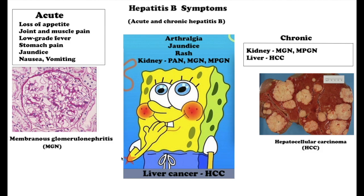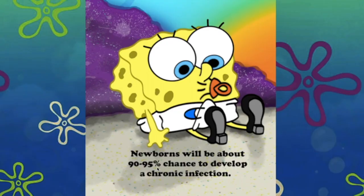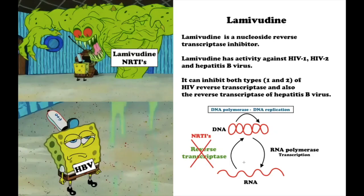If infection occurs in the first year of life, the probability of chronicity is 90–95%, which is why all infants should receive the hepatitis B vaccine as soon as possible after birth. Treatment includes oral antiviral agents that slow cirrhosis progression, reduce liver cancer incidence, and improve long-term survival. Liver transplantation is sometimes used for cirrhosis or liver cancer. Lamivudine, a nucleoside reverse transcriptase inhibitor, has activity against HIV-1, HIV-2, and hepatitis B virus, inhibiting both HIV and HBV reverse transcriptase.